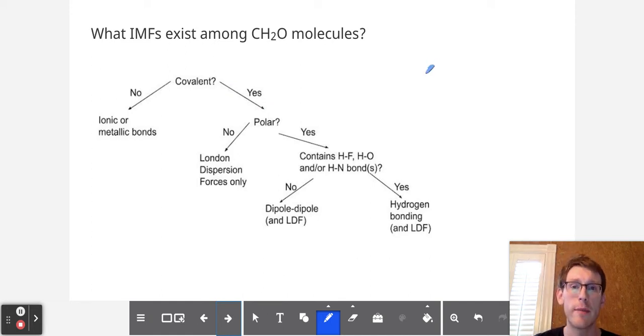Next question is, what IMFs exist among CH2O molecules? And yes, CH2O is also covalent because C, H and O are all nonmetals. Now, CH2O would look like this. Formaldehyde is another name for it.